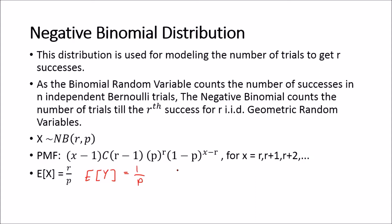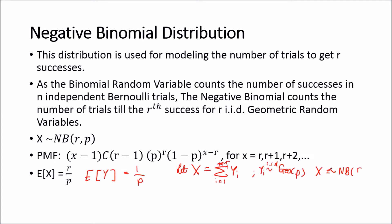This gives credence to the fact that if we let X be equal to the summation from I equals 1 to N of Y_i, where each Y_i is IID geometric with parameter P, then X is going to follow the negative binomial distribution with R — sorry, the summation should go from I equals 1 to R — then X will follow the negative binomial distribution with P being the success probability.